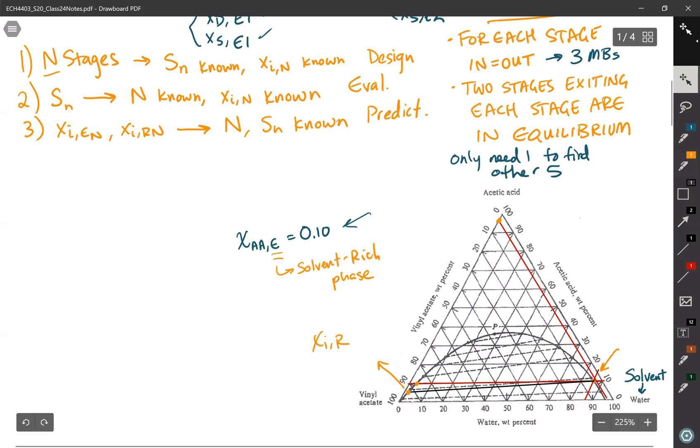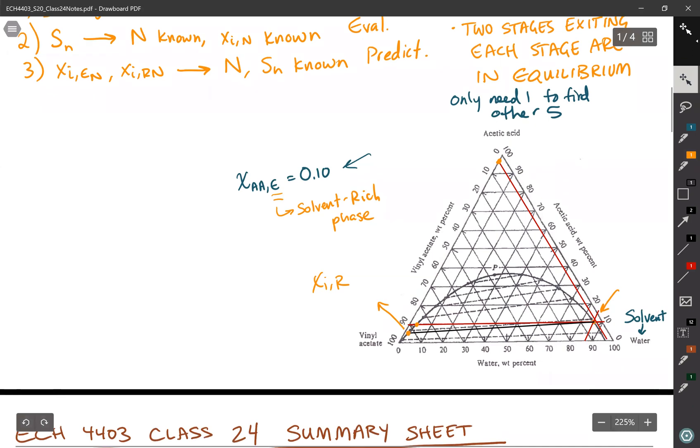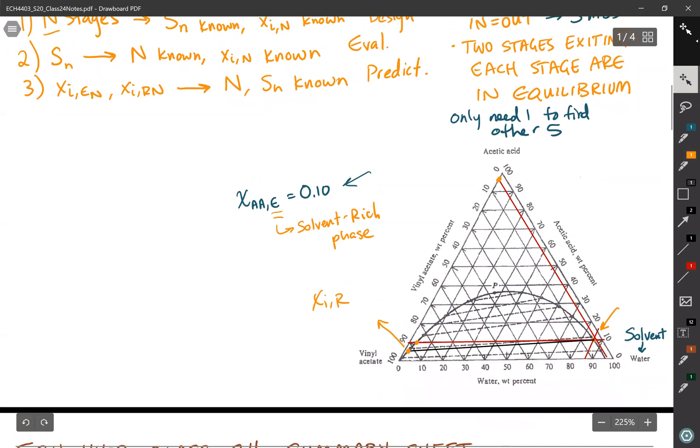So this information will be helpful as we start going through and solving some problems. Typically, you're only going to be given one design specification, but that will enable you to find the other five variables. And then once those five variables are known, solving the material balances after that is often a piece of cake. We've got a practice problem today, and I will save that for the next video.